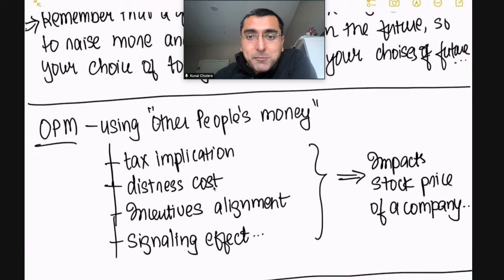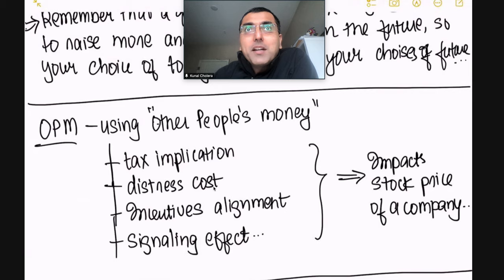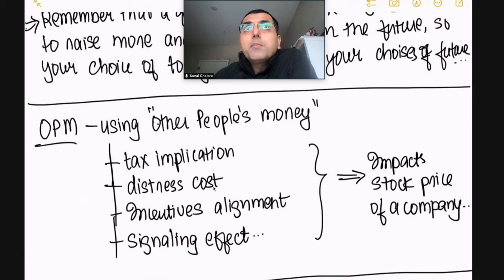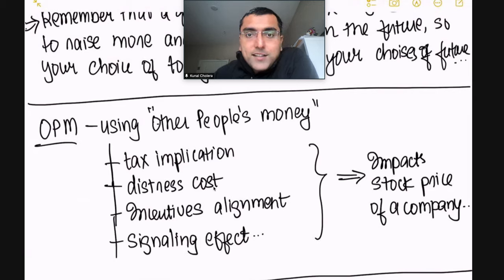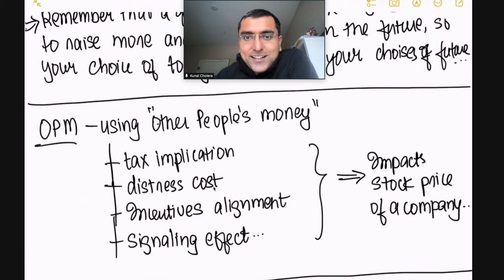OPM — using other people's money — is a concept from John Kay's book 'Other People's Money.' Using other people's money has a lot of positives. First, you get the tax benefit: you no longer need to pay taxes on the interest that you paid, since interest is tax deductible. But there are three other things to keep in mind: distressed cost, incentives alignment of managers versus owners, and the signaling effect — what information company managers are giving out to the market, which is especially important when it comes to stock price impact.